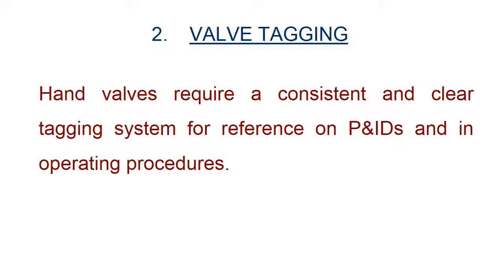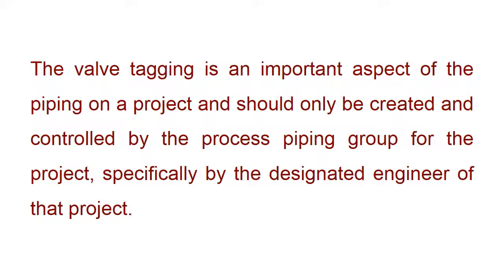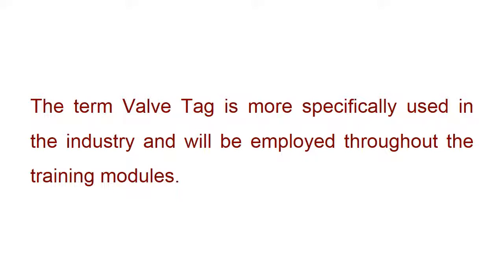Valves require a consistent and clear tagging system for reference on P&IDs and in operating procedures. Valve tagging or numbering system is usually implemented as per design and drafting procedures of the engineering consulting firm, or the client provided specifications. The valve tagging is an important aspect of the piping on a project and should only be created and controlled by the process piping group for the project, specifically by the designated engineer of that project. The term valve tagging is more specifically used in the industry and will be employed throughout the training modules.